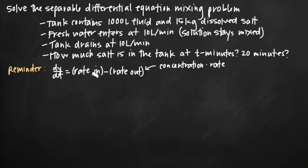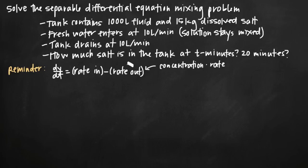The standard formula used in all mixing problems tells us that the rate at which the concentration of salt changes in the tank is modeled by rate in minus rate out — the rate at which salt enters minus the rate at which it leaves. Each of these rates is the product of concentration and flow rate, so we multiply concentration of incoming salt by its flow rate for rate in, and similarly for rate out.